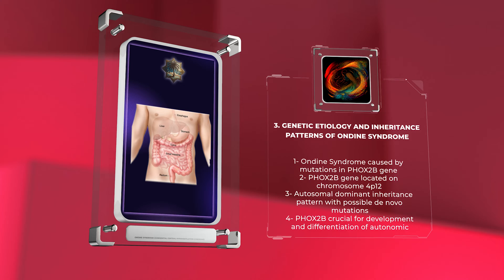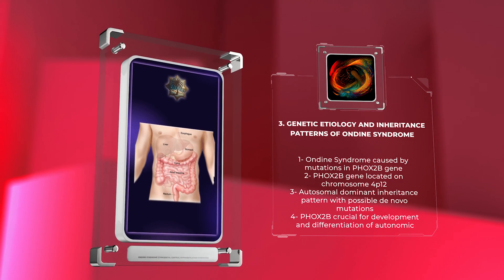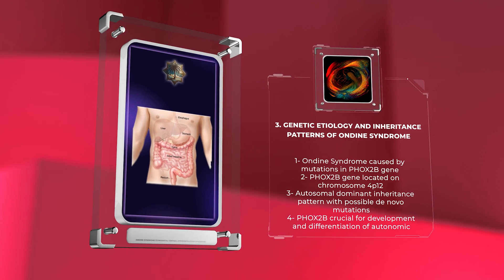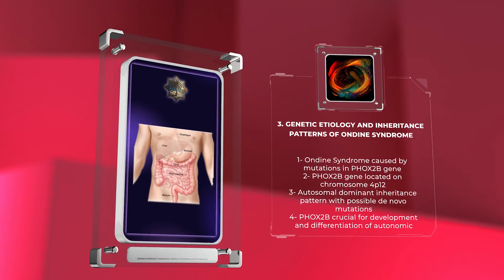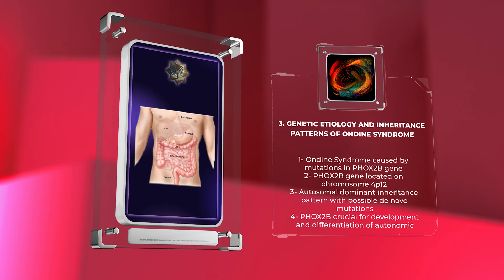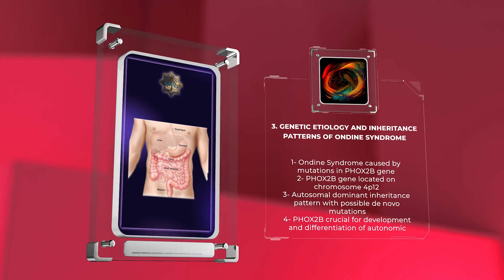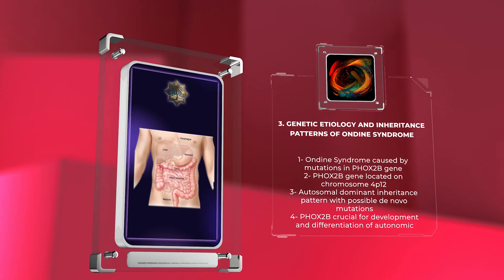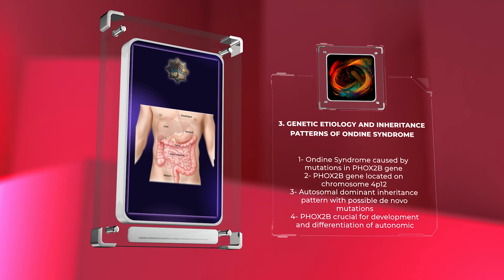Ondine syndrome is predominantly caused by mutations in the FOX2B gene, located on chromosome 4p12. Its inheritance follows an autosomal dominant pattern, although de novo mutations can also occur. The FOX2B gene encodes a transcription factor crucial for the development and differentiation of neurons within the autonomic nervous system. Hypomorphic mutations leading to diminished FOX2B expression are associated with milder forms of CCHS, while null mutations result in more severe forms with higher risk of cardiovascular abnormalities.